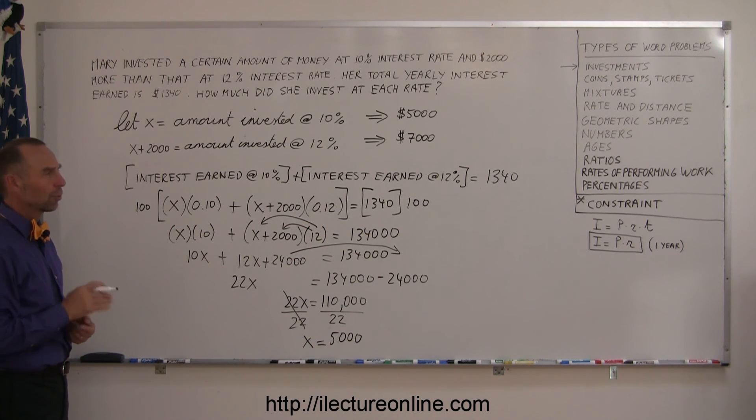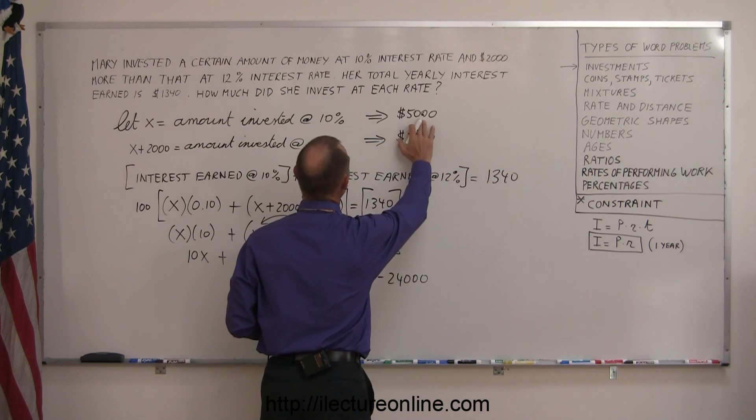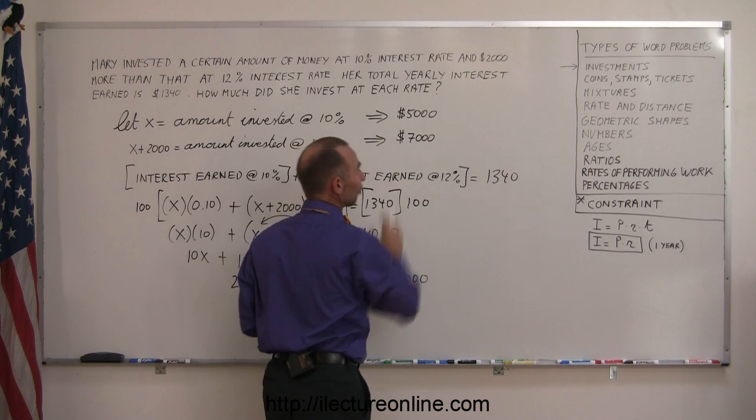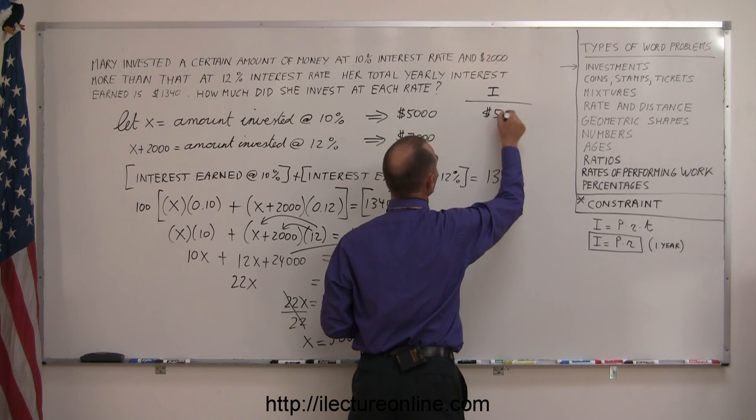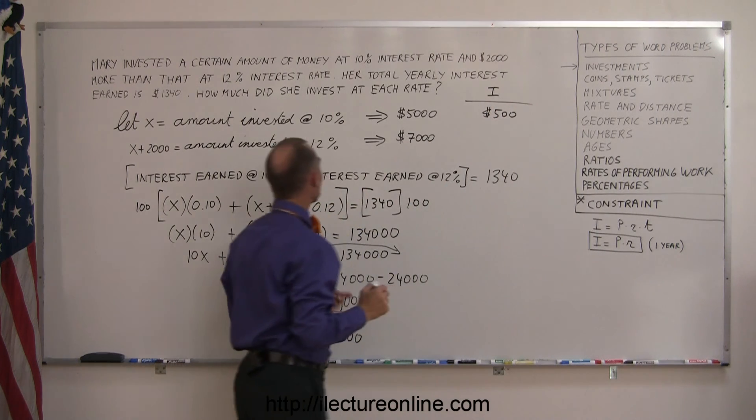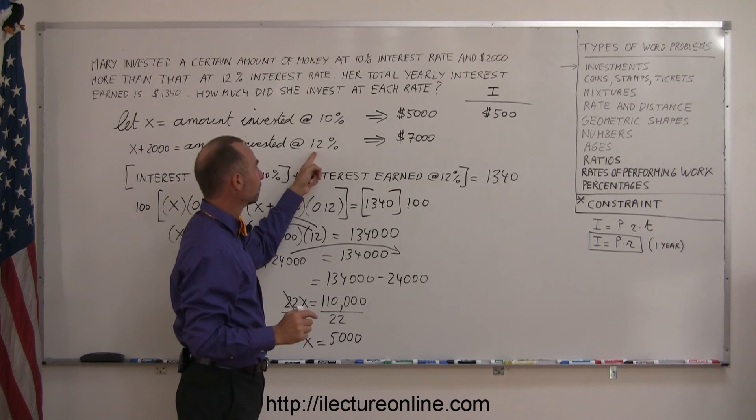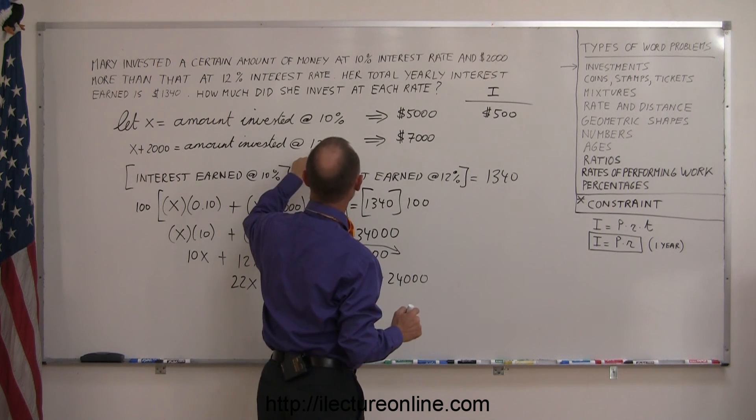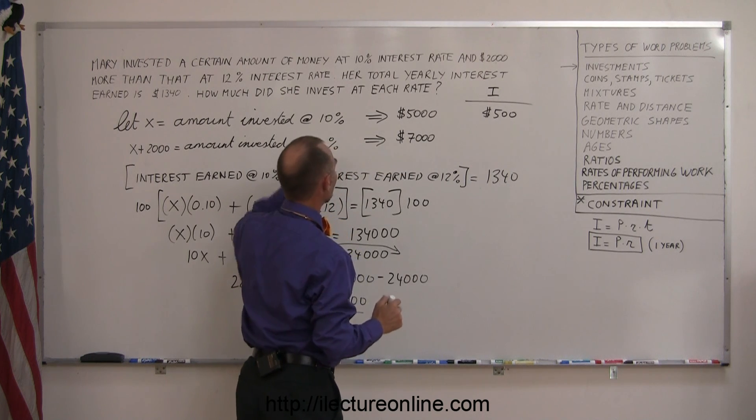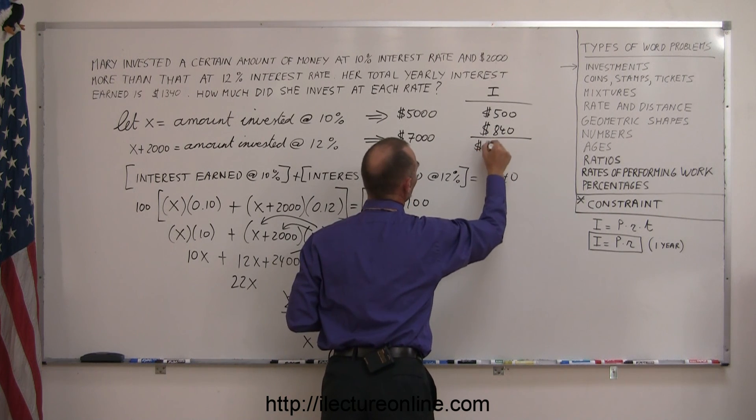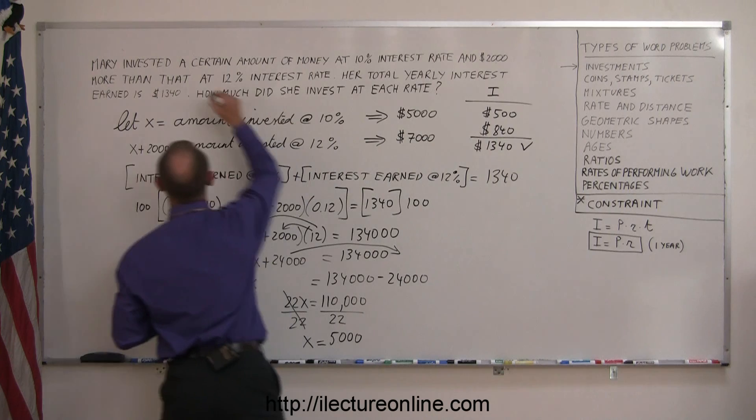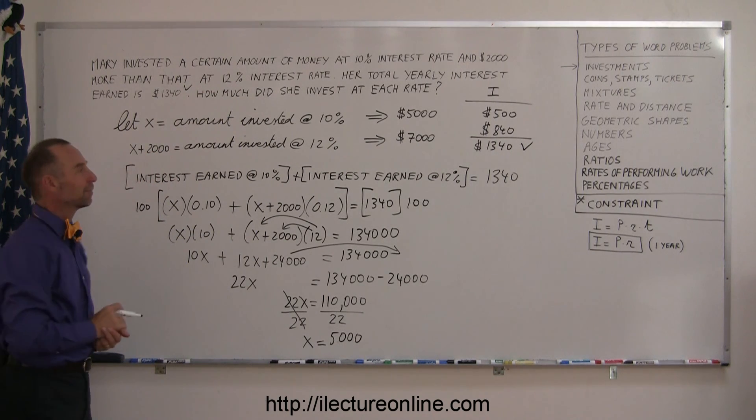If you want to make sure you did this correctly, you can check by calculating the interest earned at each rate. $5,000 at 10% interest: 10% is one-tenth of 5,000, so the interest earned is $500. $7,000 at 12%: 7 times 10% is 700, 7 times 2% is 140, so that's $840. Add them together: sure enough, $1,340, which is correct. That means I did the problem correctly.